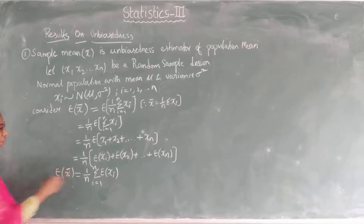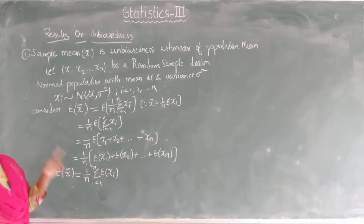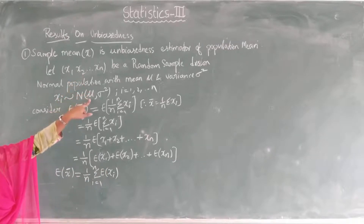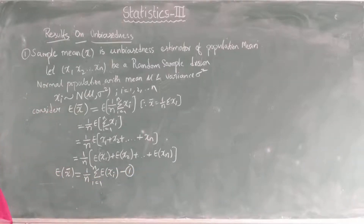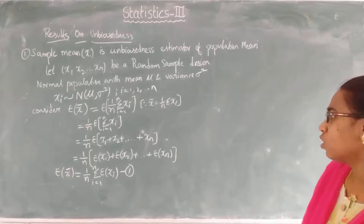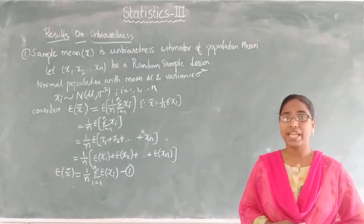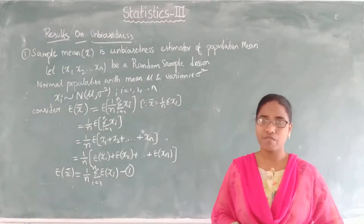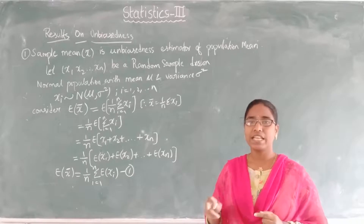We know the population mean is given, but we need to find expectation of xᵢ. Expectation of any value — if it is a discrete distribution, you write summation over xᵢ times p(xᵢ); if it is continuous, we write integral over x times f(x). So expectation of xᵢ equals summation of xᵢ times p(xᵢ).